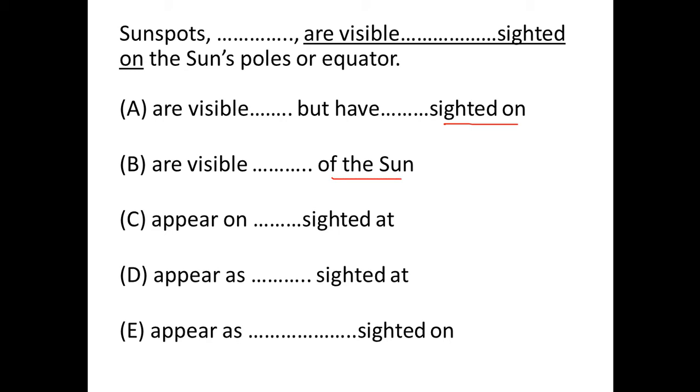Here, the correct usage is sighted on the Sun's pole or equator, not sighted at. Sighted at is wrong here. In B, of the Sun, the Sun's pole, again that doesn't make any sense, so option B is out. Now we are left with option A and E.